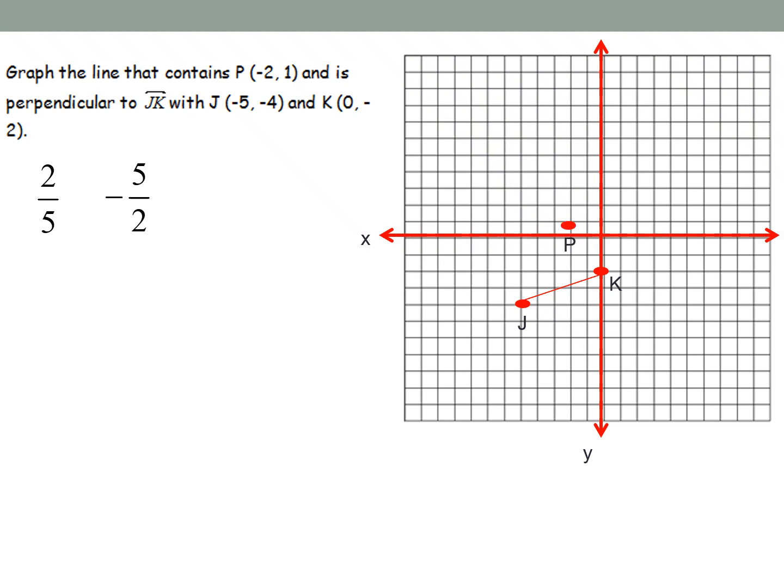And then instead of starting at a y-intercept that you're used to counting slope from, we're going to start from point P because that's what they told us in the question. So from point P, I count down 5 and right 2, or I count up 5 and left 2. Both will work. When I do that, I connect, and there we go. I have successfully completed a perpendicular line to JK.